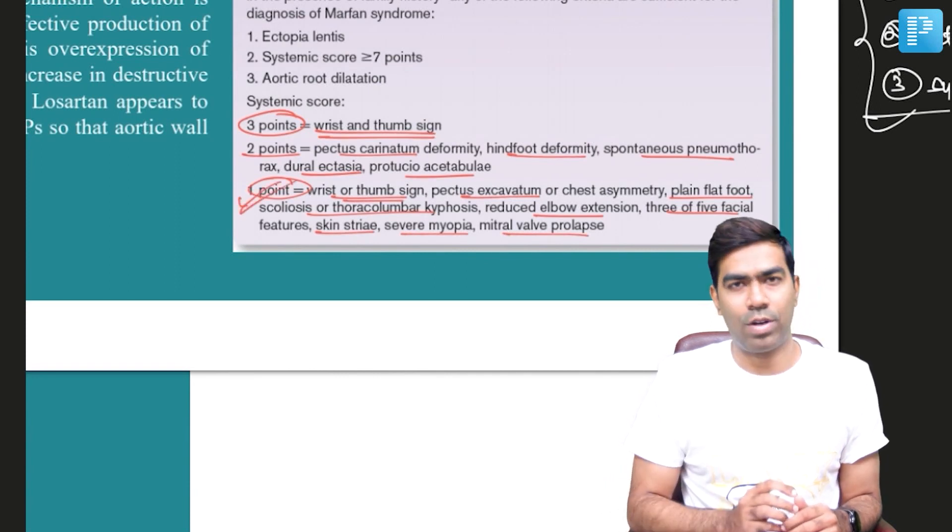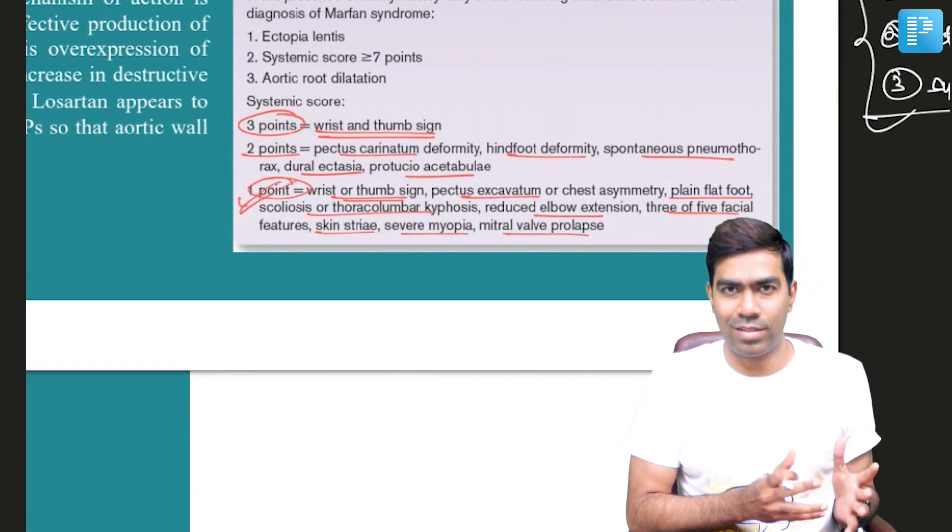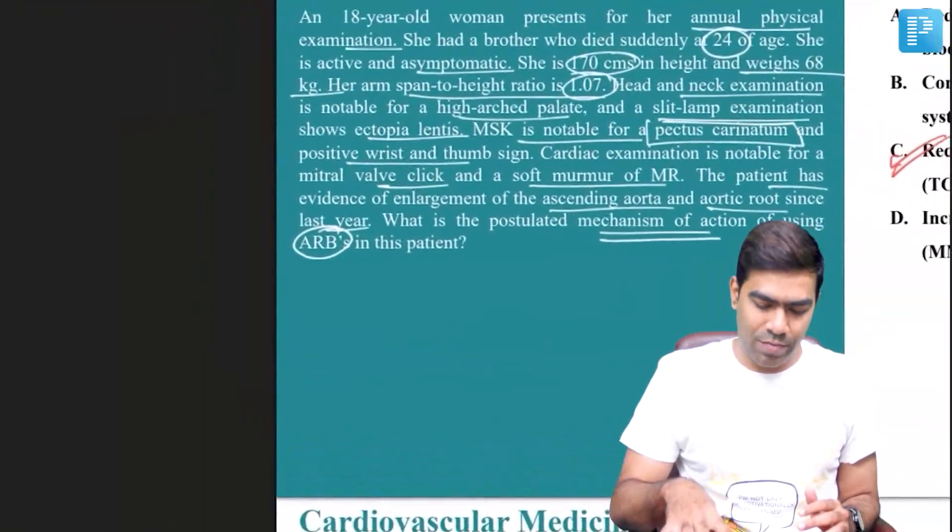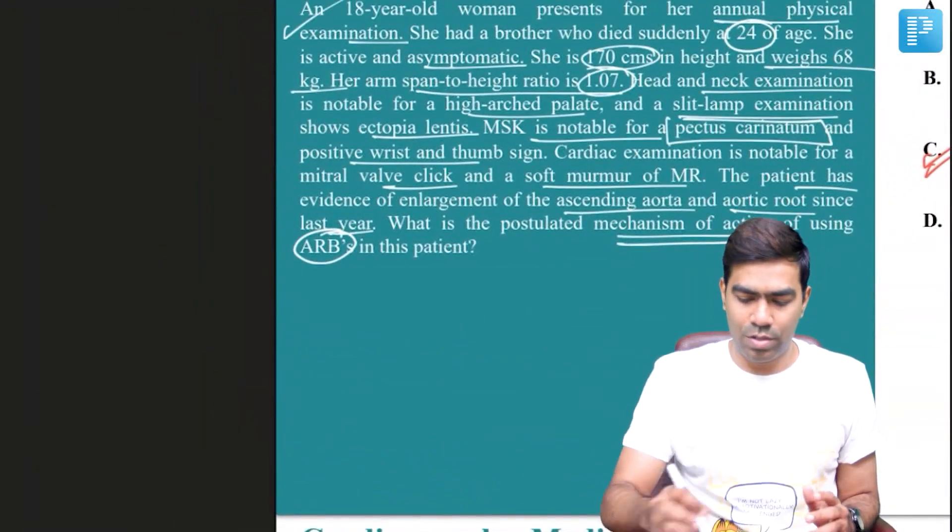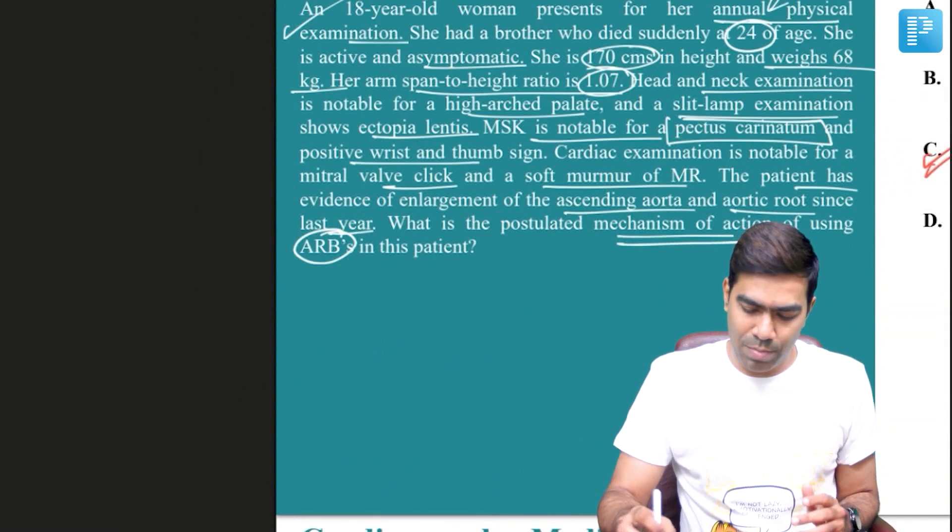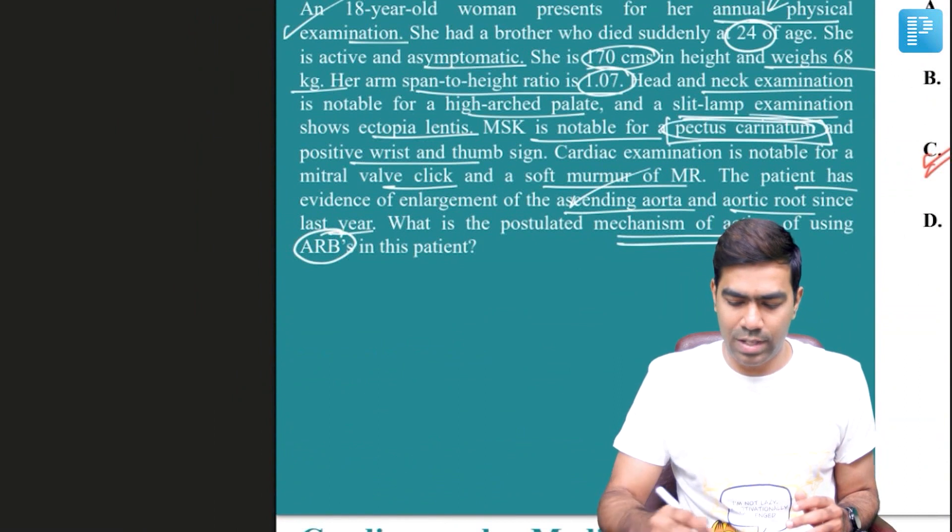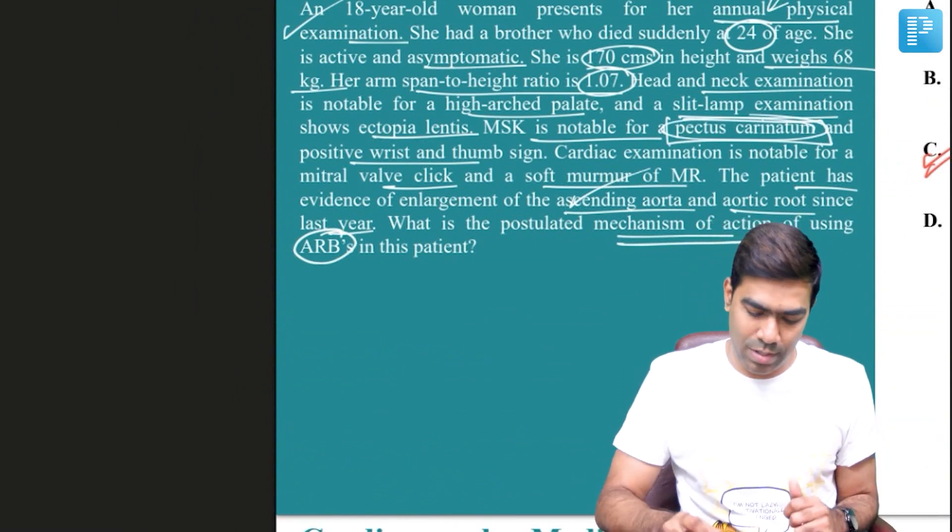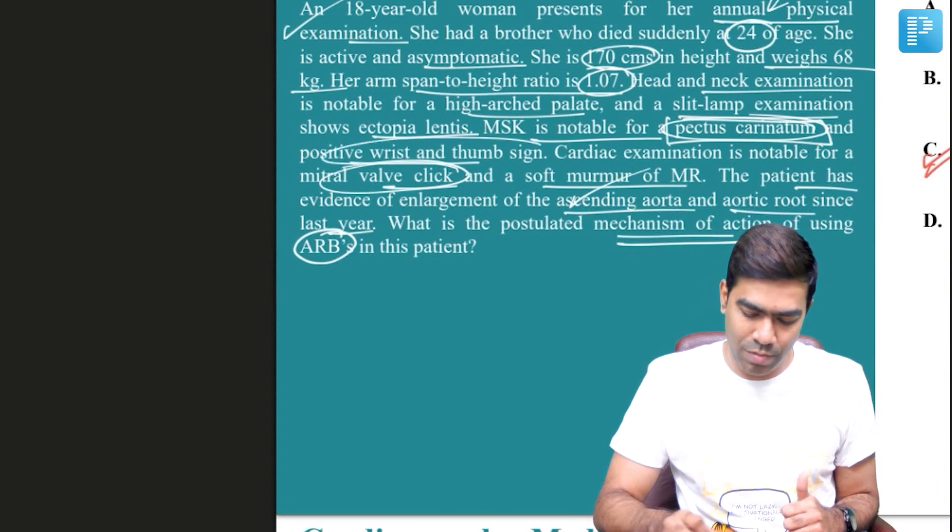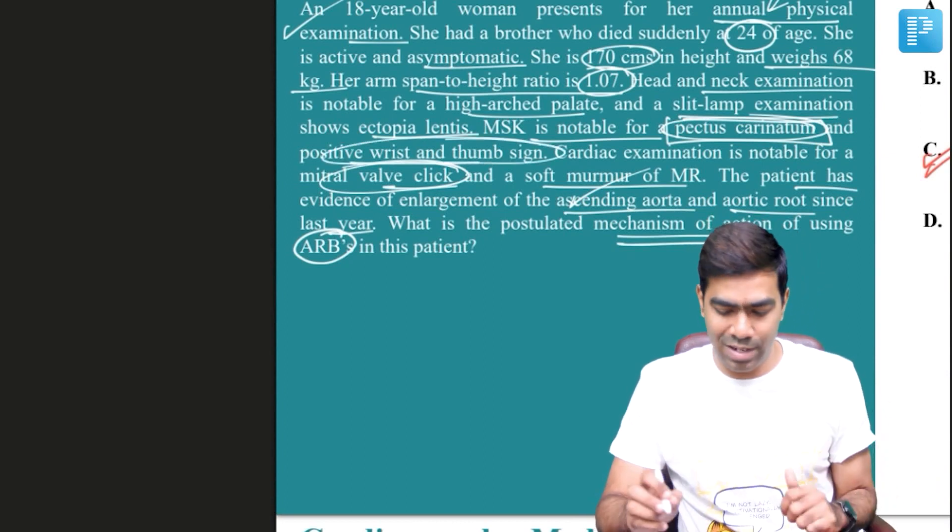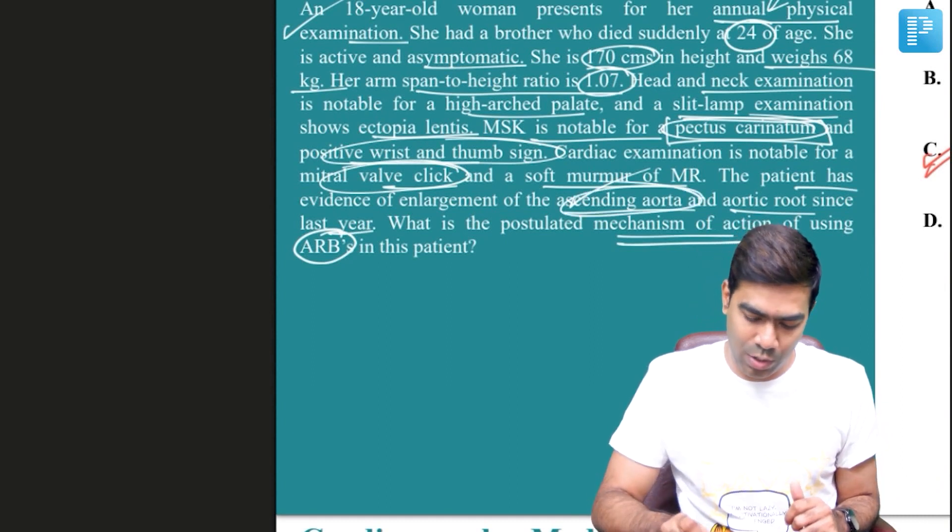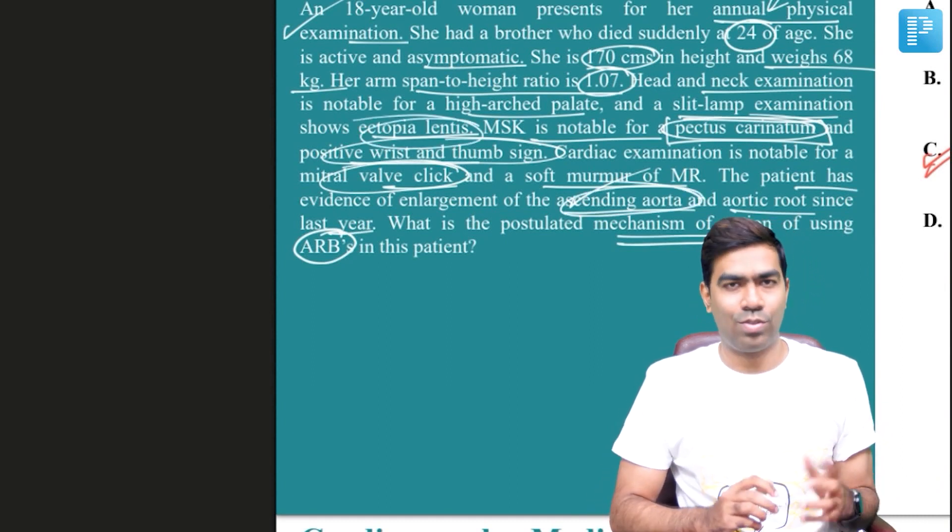The patient we've been discussing definitely has Marfan syndrome. She has family history plus multiple systemic features: pectus carinatum (two points), mitral valve prolapse (one point), positive wrist and thumb signs (three points), aortic root dilatation, and ectopia lentis.